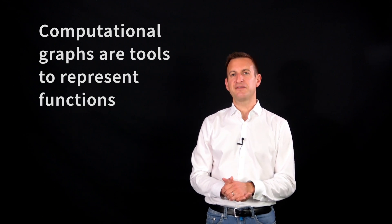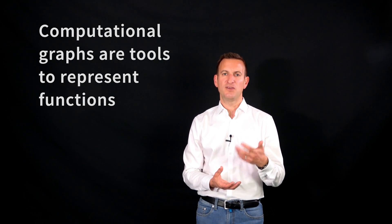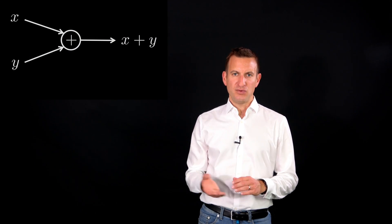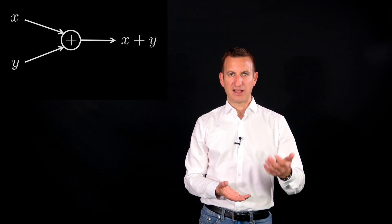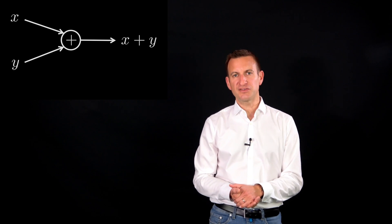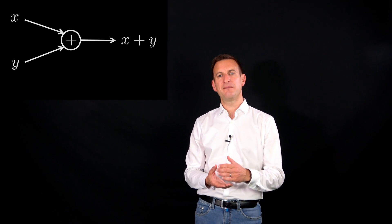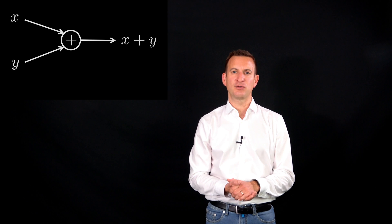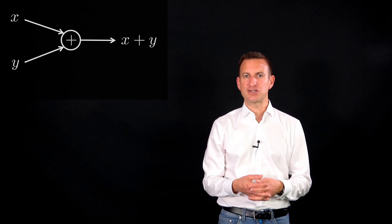So first let's start with what's a computational graph. A computational graph is a graph where in every node we store a mathematical operation like adding up two values. So here we have two incoming edges for that node, x and y. And we compute the sum of x and y, f equals x plus y, and this is kind of the output. So this is a small operation.